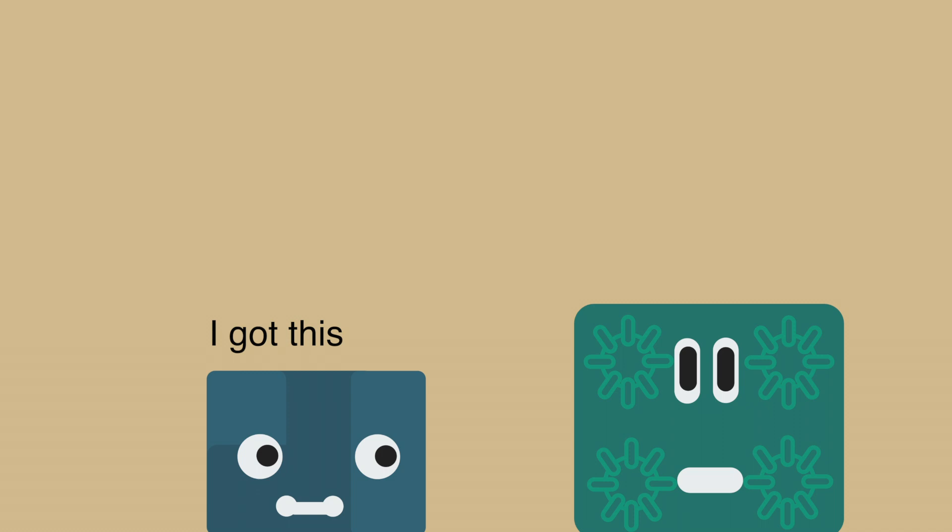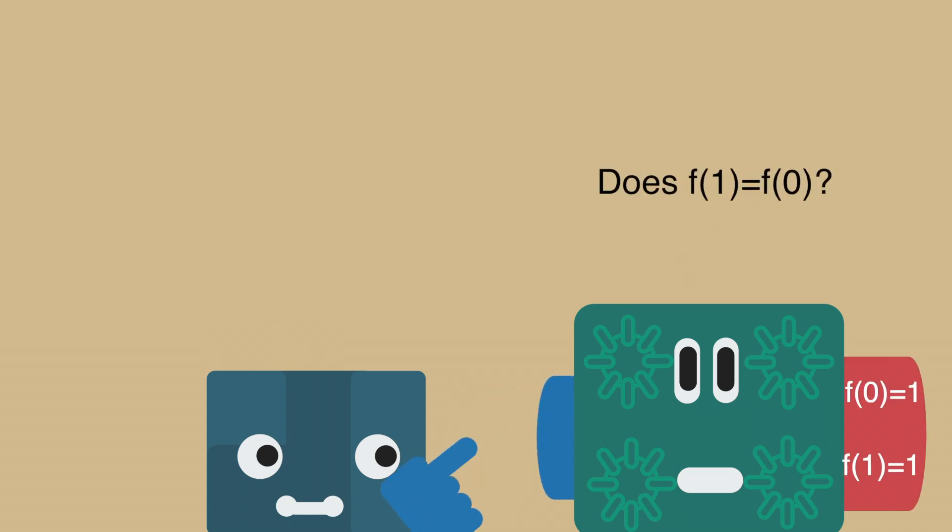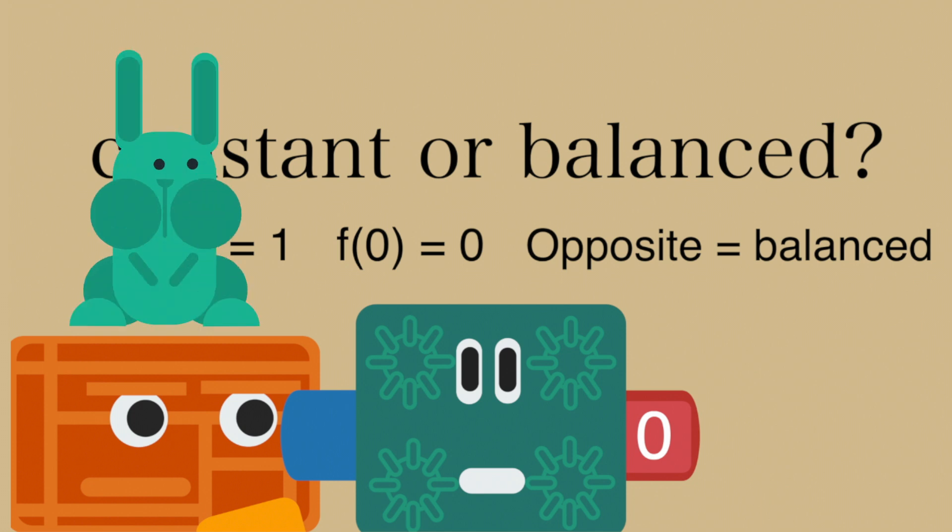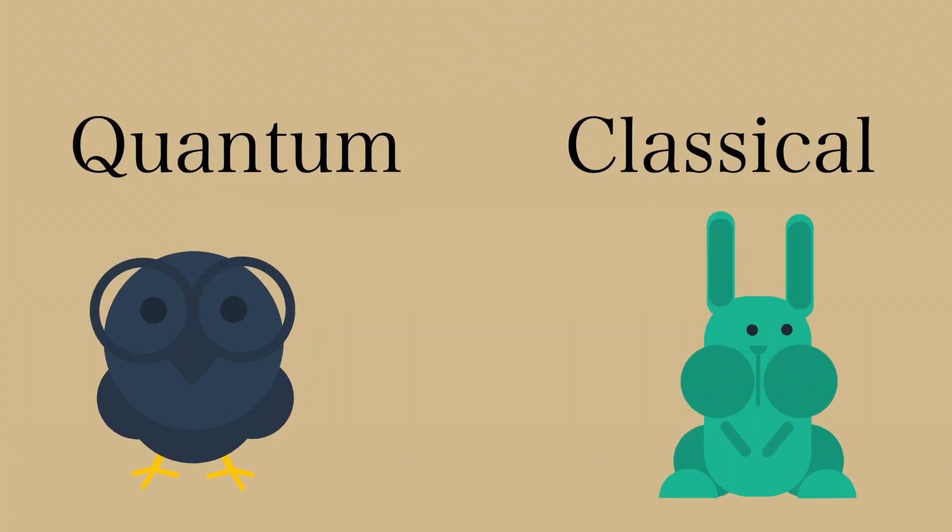The Deutsch algorithm proves that a quantum computer only needs to ask the oracle once to answer this question, thanks to its use of superposition. In this case, we can imagine the quantum algorithm to be my friend on the right, and the classical algorithm to be my friend on the left. They can both solve the problem, but the quantum algorithm needs to ask the oracle fewer times. Therefore, it is more efficient.